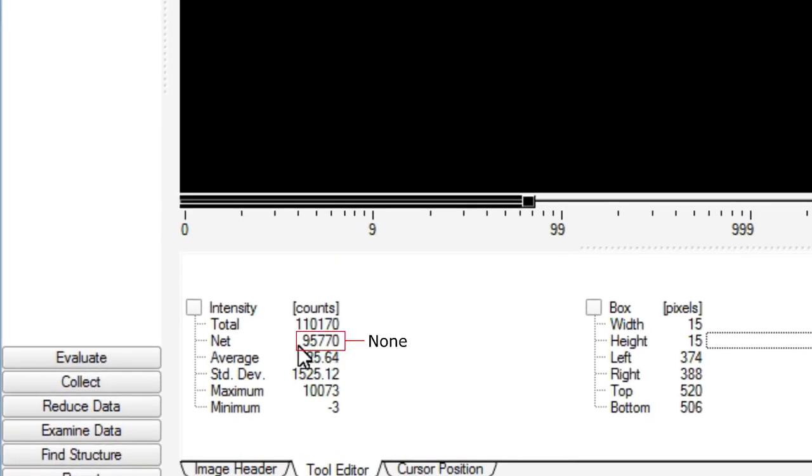For this we choose a square cursor 15 times 15 should be good center it around the bright spot and read out the intensity. The exact same thing we do now for all three frames we collected write down the intensities and compare them.